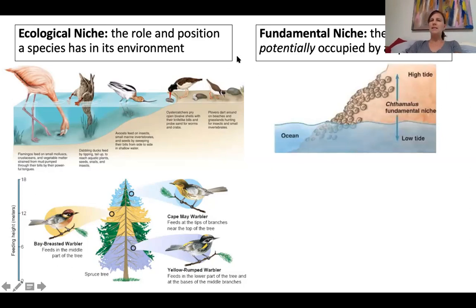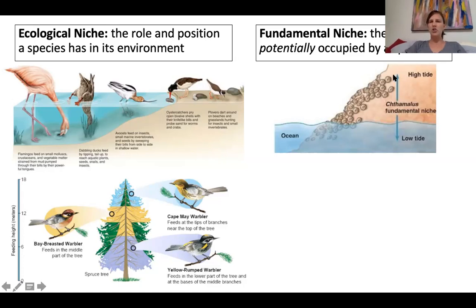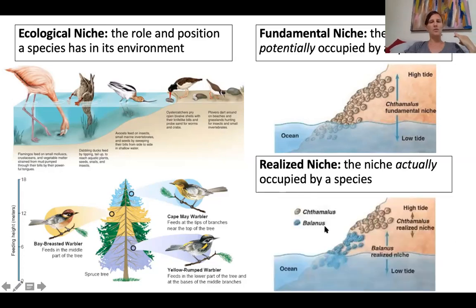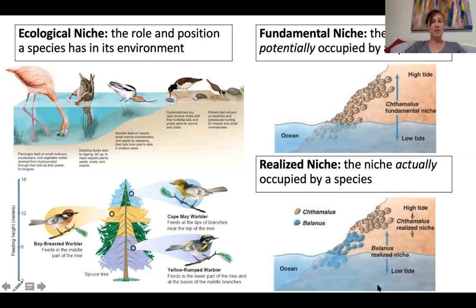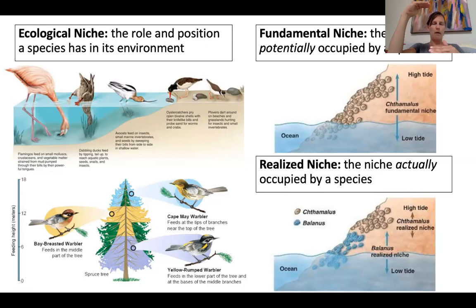A fundamental niche is the niche that a species can potentially occupy if there were no other species and no competition. For example, limpets — which you've seen in tide pools — have a potential niche extending from the high tide zone all the way into the low tide zone. However, due to competition within the community, they have a realized niche — the niche actually occupied — which is only the high tidal zone. This is because another species, likely barnacles, out-competes them in the low tide zone. So their realized niche is narrower than their fundamental niche.